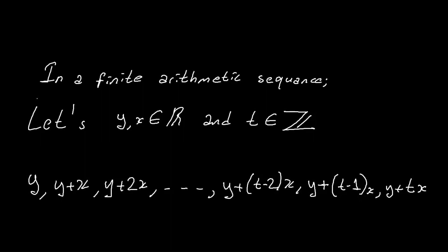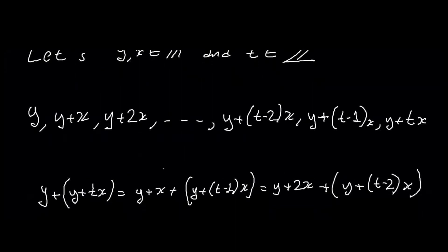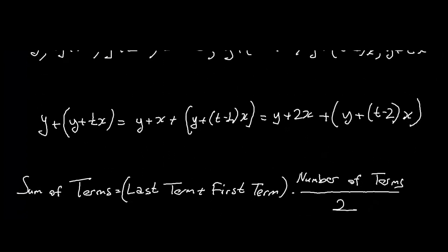Let's continue with the last formula of the video. We want to explain the reason for the sum of terms formula for all general finite arithmetic sequences with an example. In a finite arithmetic sequence, let y and x be real numbers and t be an integer. In our example finite arithmetic sequence, you can easily see that the sum of the first and last terms equals the sum of the second and second-before-last terms, and it equals again the sum of the third and third-before-last terms. So the general formula for the sum of terms can be written as: sum of terms equals (last term plus first term) times half of the number of terms.